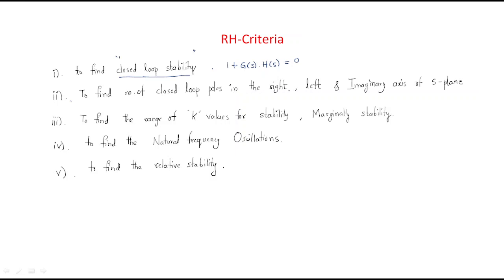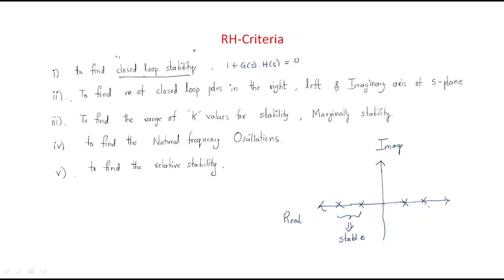The second point of RH criteria is to find the number of closed loop poles in the right, left, and imaginary axis. On the S-plane, we have the real axis and the imaginary axis. When poles are on the left-hand side, the system is stable. When poles are on the right-hand side, the system is unstable. When poles are on the imaginary axis, the system is marginally stable.